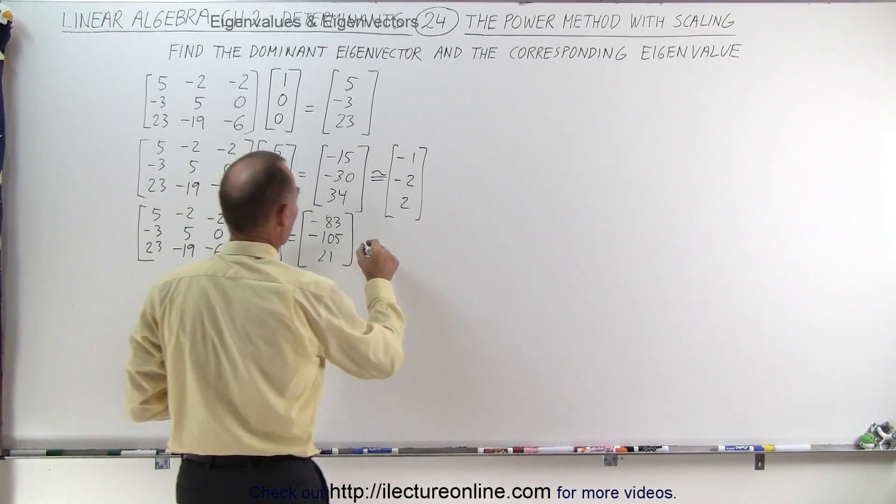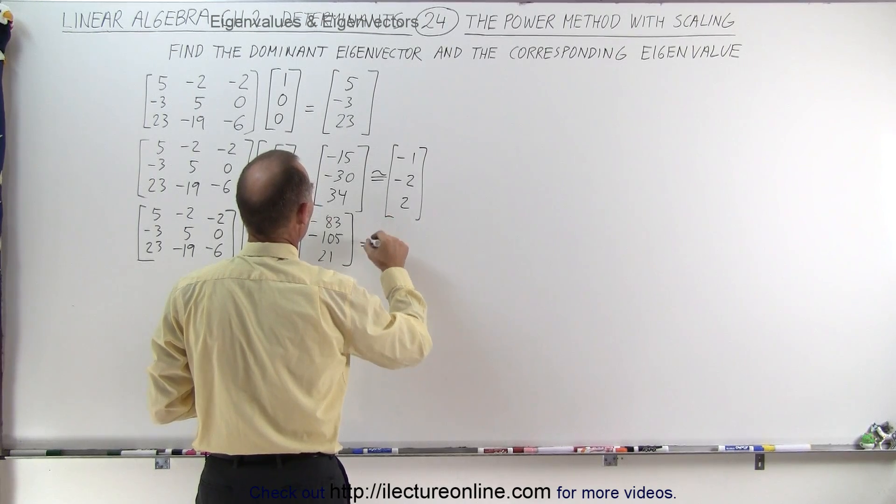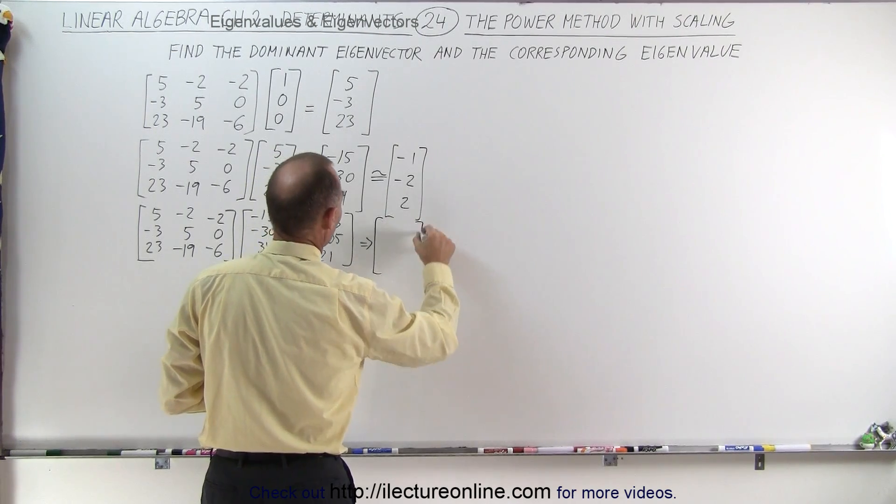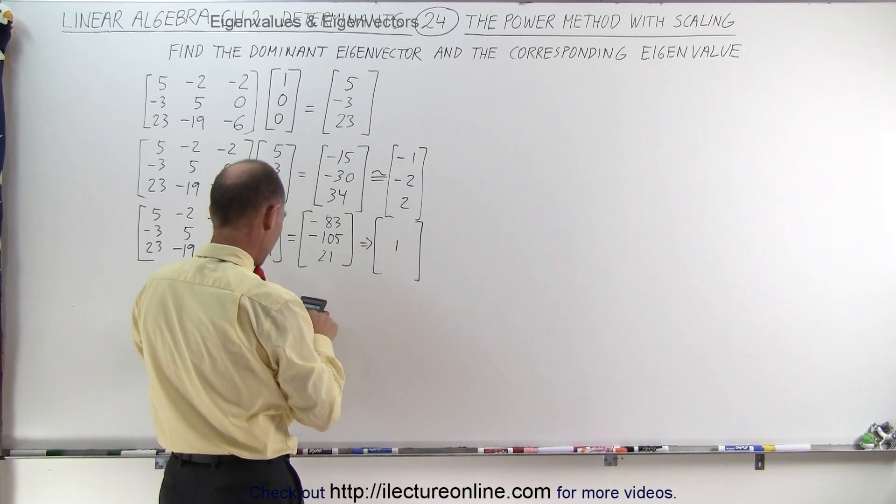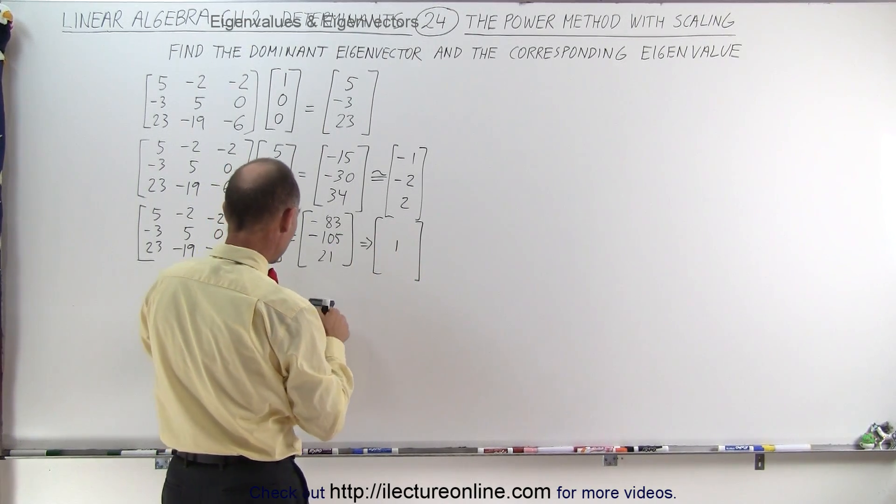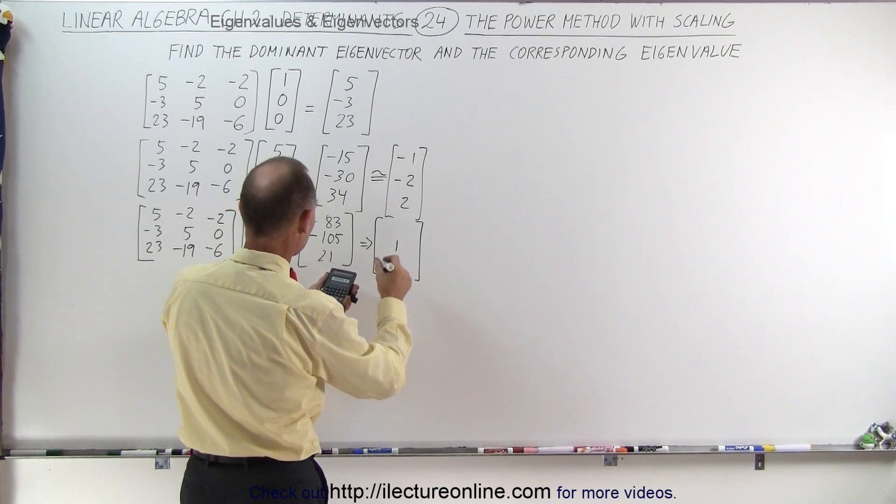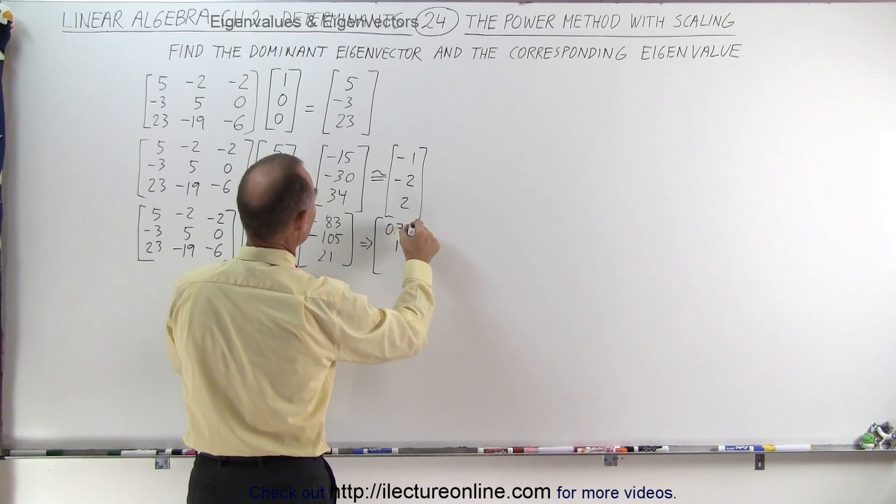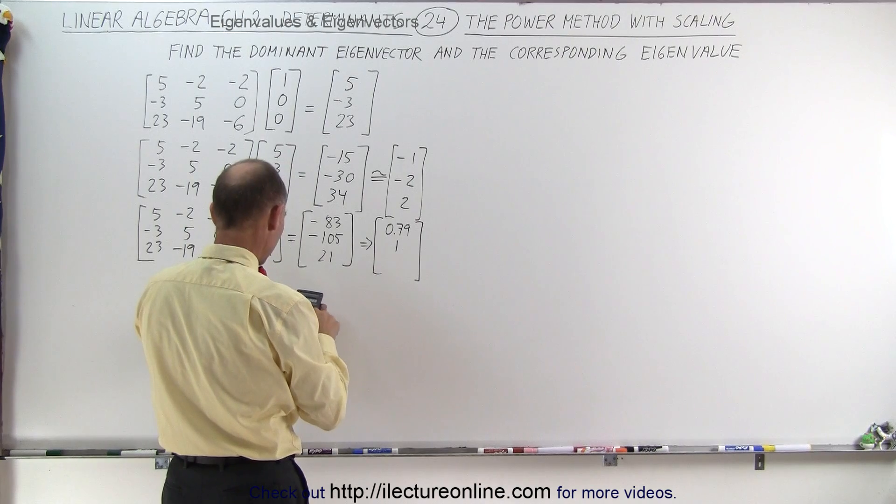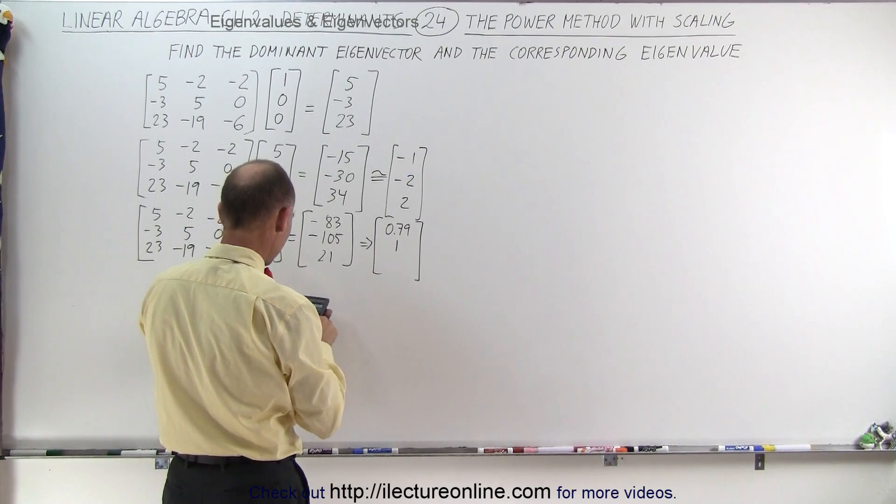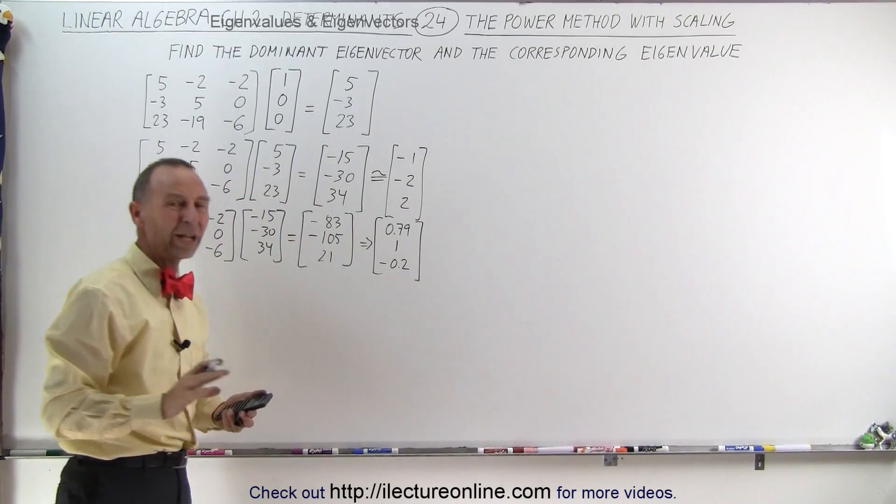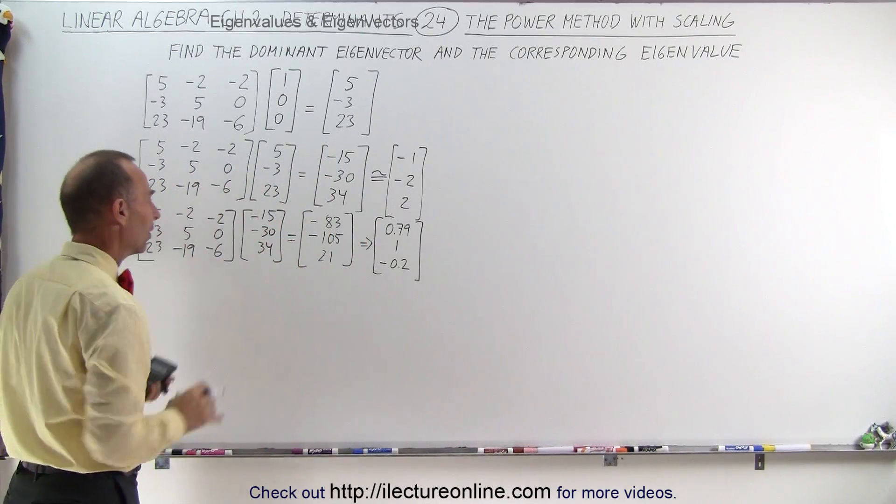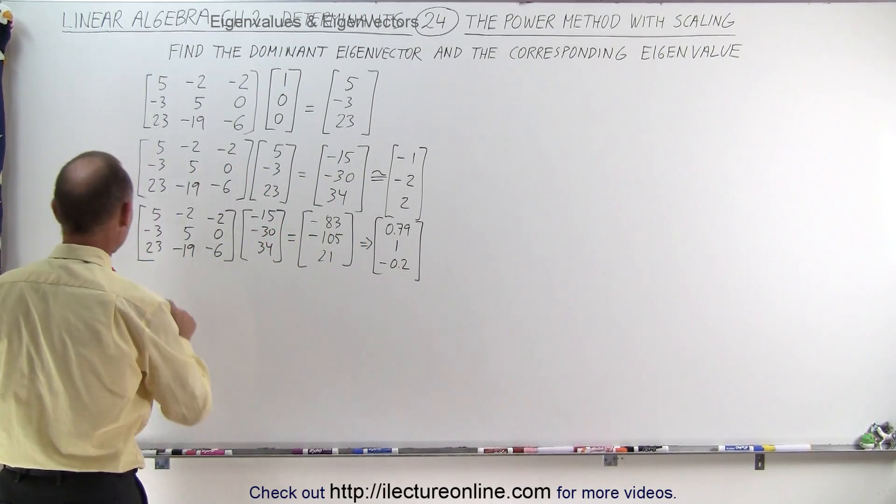If you want to scale it, this is what it would look like. This can be written as, if we divide this by negative 105, we get a positive 1. 83 divided by a negative 105 gives us a 0.79. And 21 divided by a negative 105 gives us a negative 0.2. So we're not there yet. It doesn't look like anything is converging yet. Let's try our next attempt.